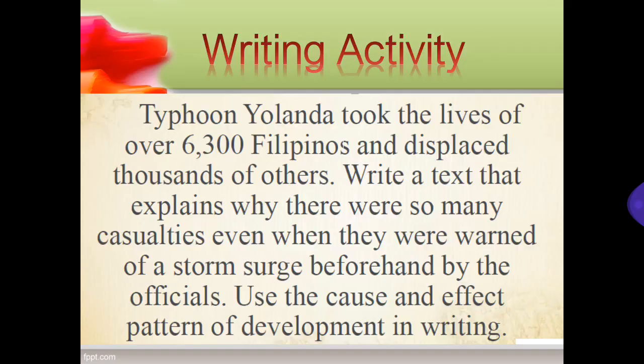And for your writing activity: Typhoon Yolanda took the lives of over 6,300 Filipinos and displaced thousands of others. You are to write a text to explain why there were so many casualties even when they were warned of storm surge beforehand by the officials. Use the cause and effect pattern of development in your writing.